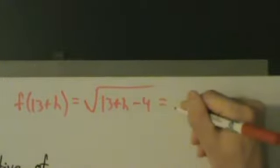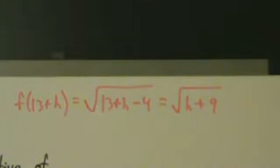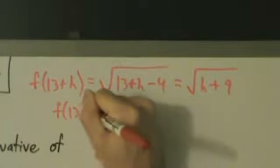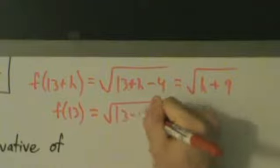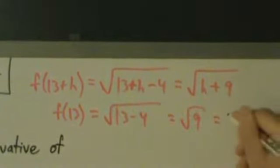All right, and if we simplify that, that's going to be the square root of h plus 9. Okay, so how about just f of 13? So it's actually pretty much going to be the same stuff, just without the h. It's going to be the square root of 13 minus 4, which is the square root of 9, which we know is 3.